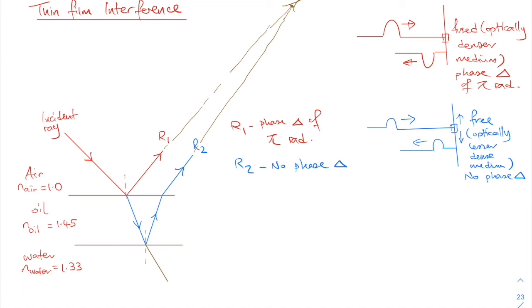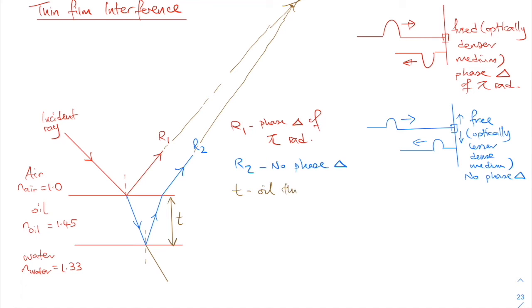I'll use the letter t to denote the thickness of the oil. Ray R2 travels a distance of approximately 2t more than R1. We must imagine the ray coming in is nearly perpendicular to the surface of the oil — my diagram is exaggerated. The extra distance covered by R2 is effectively 2t, so 2t is the path difference between R1 and R2.